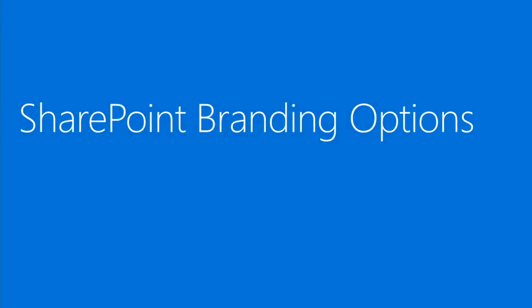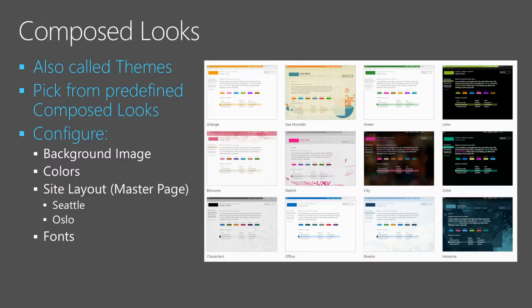Now we'll talk about some more detailed branding options. On the easy left side where you don't have to worry about changes coming down the pipe, we've got composed looks — sometimes called themes. Essentially you pick from predefined looks. You can configure them a bit too: change background image, change colors, change the site layout which swaps between two master pages on the back end, and change associated fonts. By doing all that, you've written no code and you've applied some style to your site.